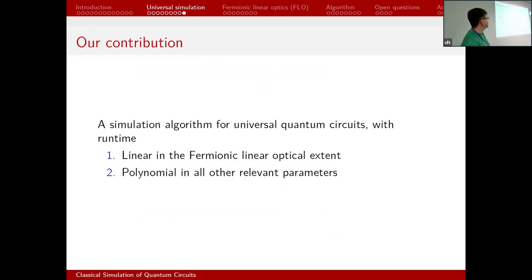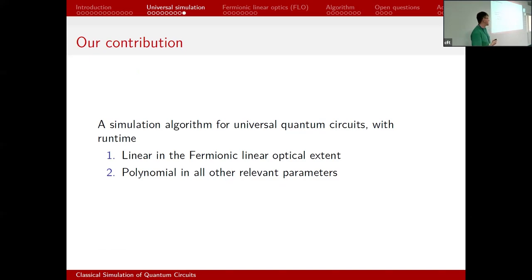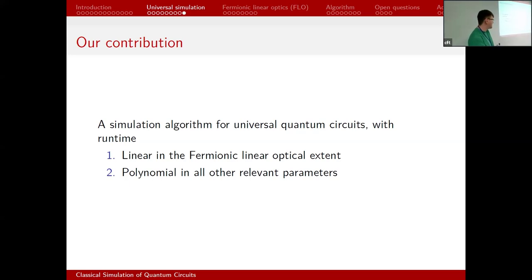What did we do? Kamal, Michal, and I cooked up a simulation algorithm that works for universal quantum circuits written in terms of an arbitrary fermionic linear optics (FLO) gate and some non-FLO gates. The algorithm is polynomial in everything, except that the runtime depends linearly on the extent. When you expect an exponential runtime for a quantum simulation algorithm, the exponential comes entirely from the extent being exponentially large. Everything else is polynomial. In some sense, the extent is telling you how non-classical your computation is.